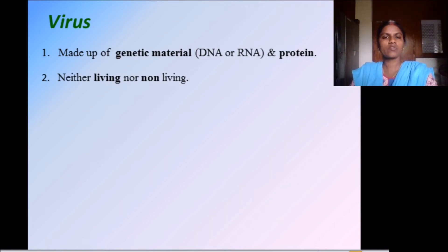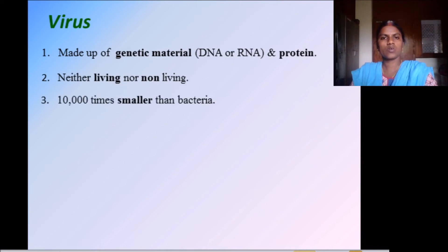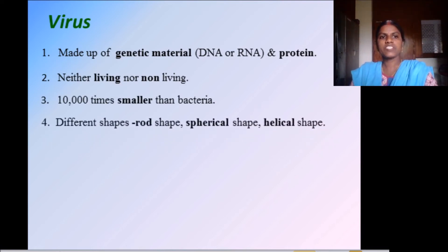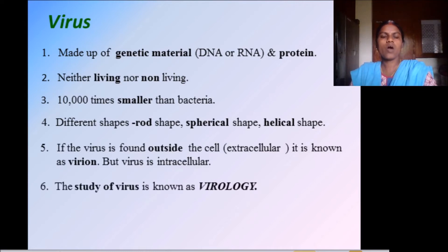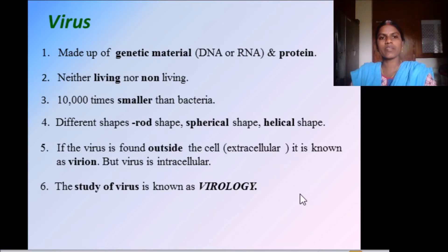We cannot see a virus directly — it is not considered as living or non-living. It is 10,000 times smaller than bacteria — very much smaller. It has different shapes: rod shape, spherical shape, helical shape, and cylindrical shape. If a virus is found outside the cell it is known as a virion, but viruses are intracellular — they are located inside a cell. The study of viruses is known as virology.